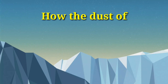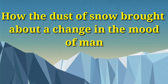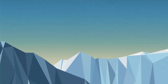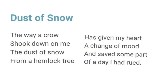The second stanza describes how the dust of snow brought about a change in the mood of the man. To conclude, a man reached near the hemlock tree in the winter season. A crow, while shifting himself, shook some dust of snow which landed on the speaker. He was troubled, in depression and despair. But that dust of snow brought about a positive change in his mood and saved him from possible regret. The end of the poem appears to be ironic because the bird linked with evil forebodings brings about a positive change in the man. The message is very clear: sometimes seemingly insignificant natural events do bring about a great change.